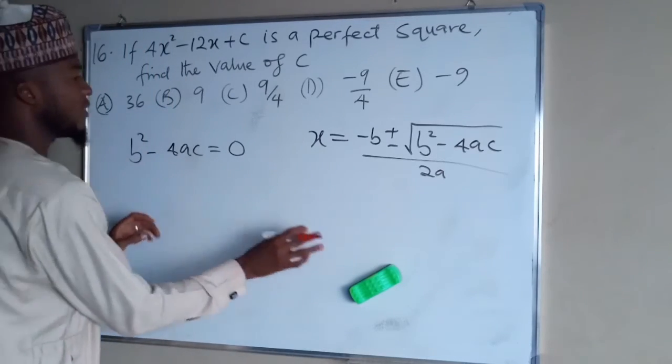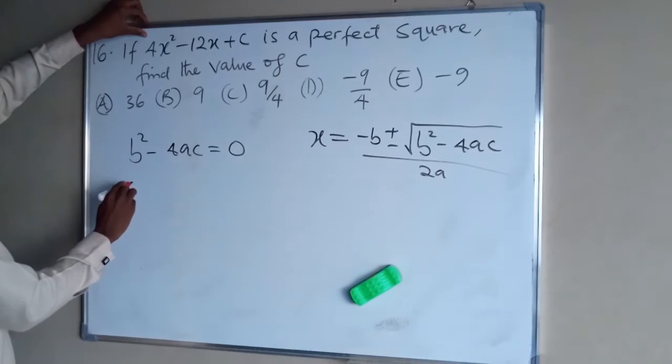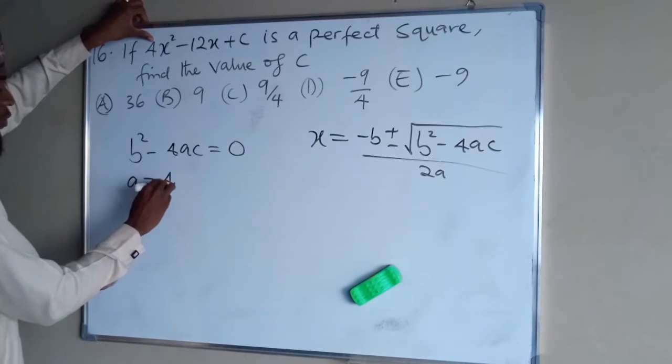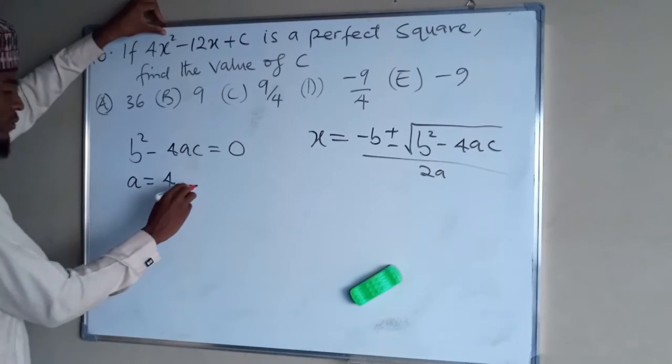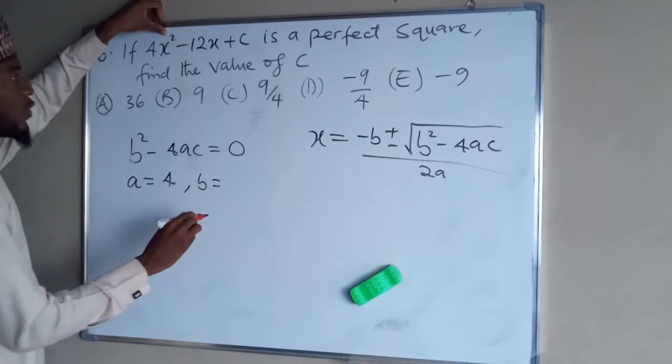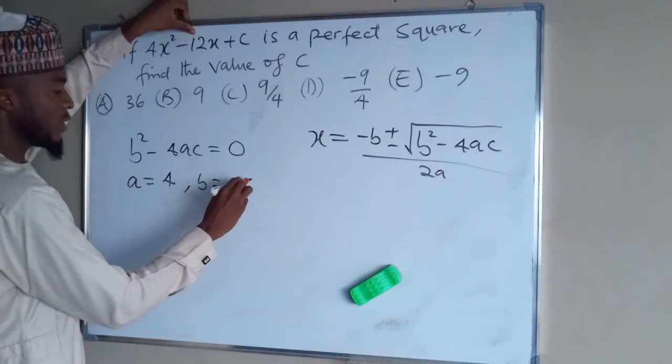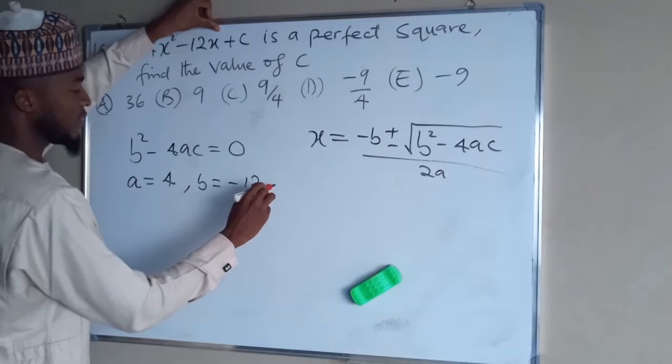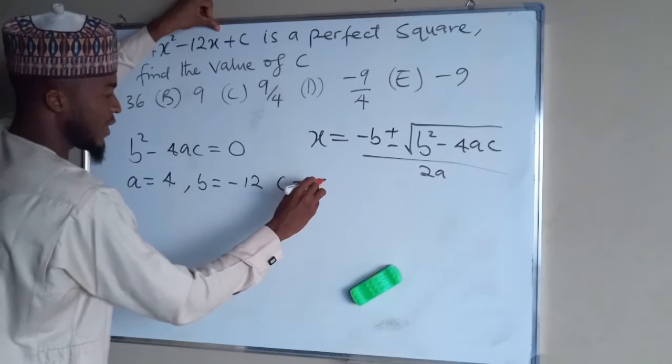So let us test for this. In this equation, you know A is going to be equal to 4, which is the coefficient of X squared. B is the coefficient of the middle term, which is minus 12. And C is the same thing as C.